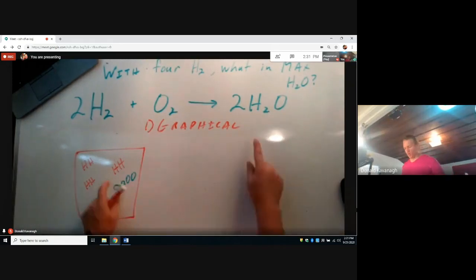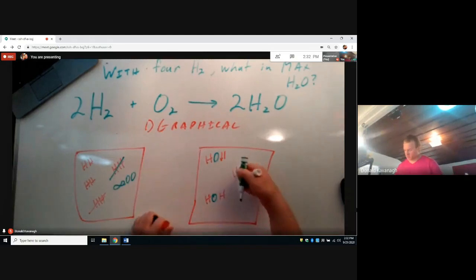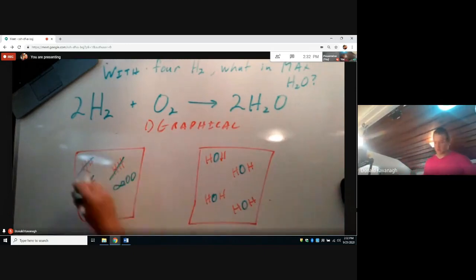What is the maximum number of waters that could be produced? In this graphical method, it's kind of like going back and forth here. If we make one water molecule, that's going to use up two. If we can make two water molecules, that's going to use up another two. Assuming an infinite amount of O₂, our theoretical limit is four water molecules.